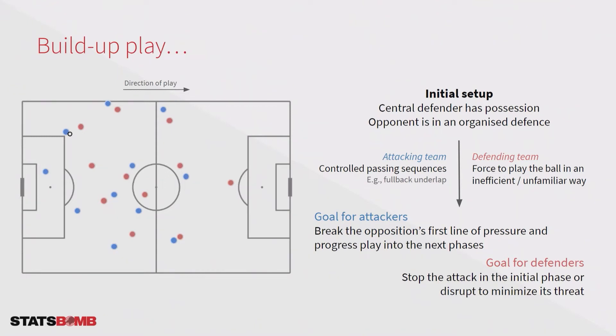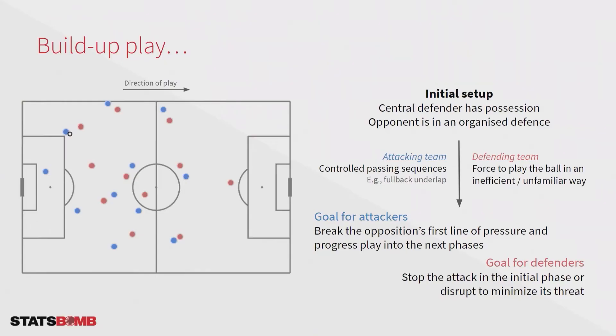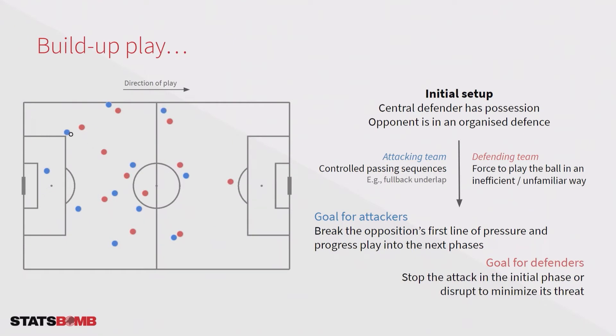On the other hand, the goal of the defenders is to stop this attack in this initial phase or to disrupt it to minimize its threat. By optimally positioning themselves they can force the opponent to play the ball in an unfamiliar or inefficient way. Taking the fullback underlap example, we can push a red defender into the gap, which prevents the fullback from running upfield, forcing the attacking team to play the ball backwards — just one way this buildup could be disrupted.